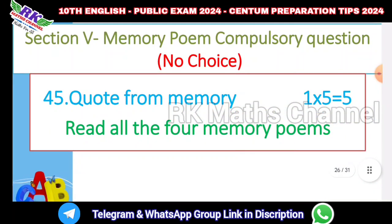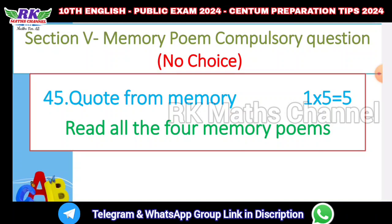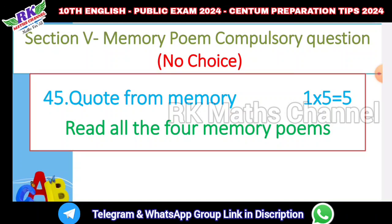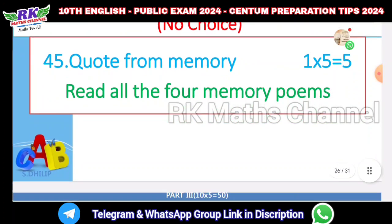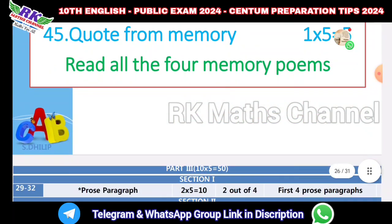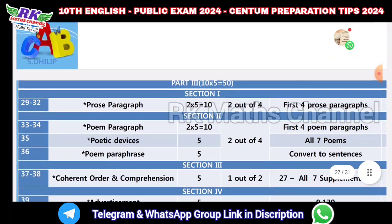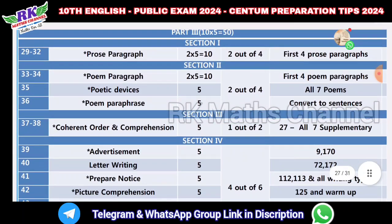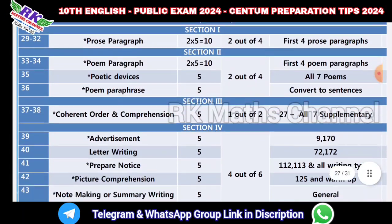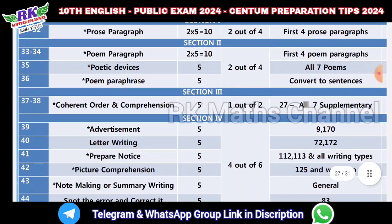Section 5 covers memory poems - five lines each. There are four memory poems, each worth five marks. This completes Part 3 topics.